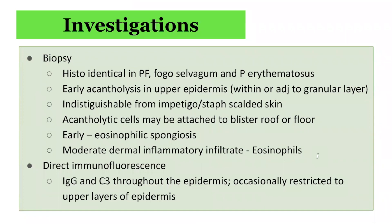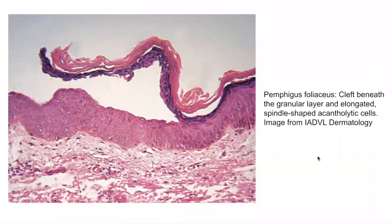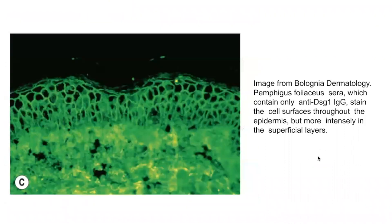Direct immunofluorescent studies will show IgG staining throughout the epidermis; however, it is particularly prominent in the upper layers of the epidermis, as this is where Desmoglein 1 is typically expressed. Here is a histological slide demonstrating acantholysis in the upper layer of the epidermis, characteristic of Pemphigus foliaceus. The cleft occurs beneath the granular layer of the skin. On the direct immunofluorescent study, when the serum contains only anti-Desmoglein 1 IgG, it stains the cell surface throughout the epidermis but more prominently in the superficial layers.